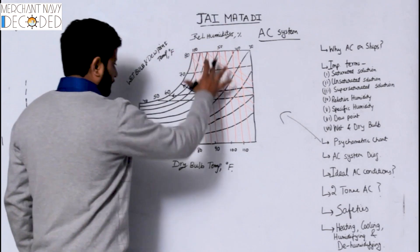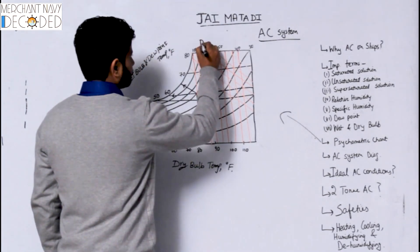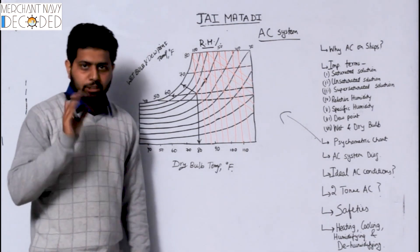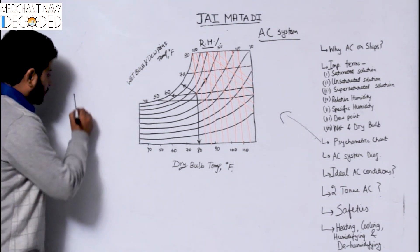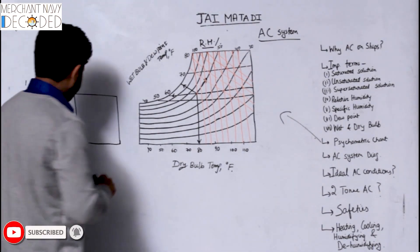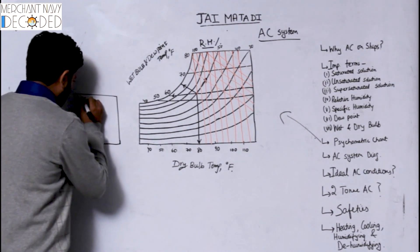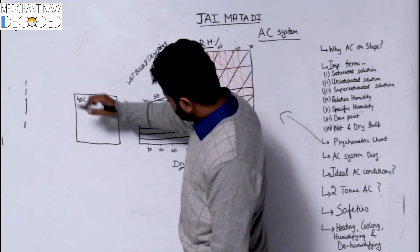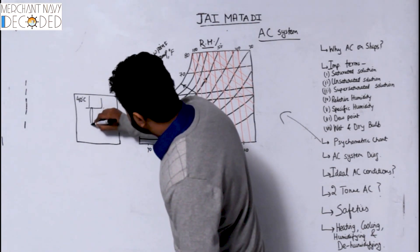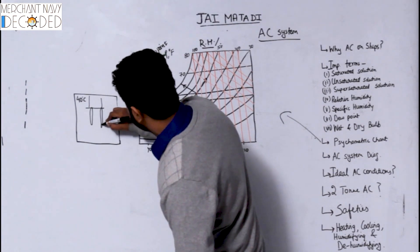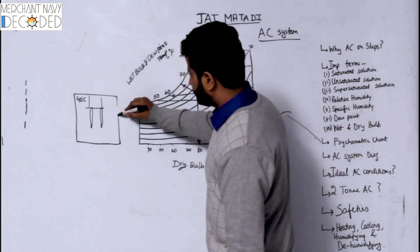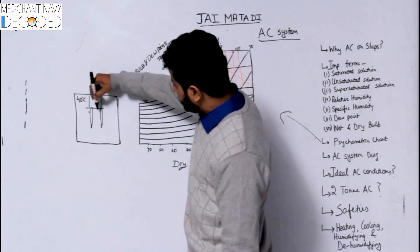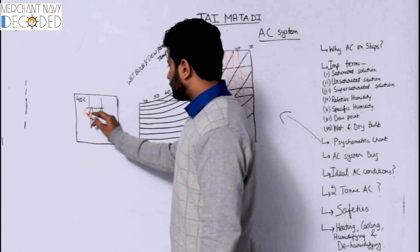This is a psychrometric chart, but before that I will talk about wet bulb and dry bulb temperature. So I take a room and make the temperature 40 degrees centigrade, and I have two thermometers in this room. Now if the temperature is 40 degrees centigrade, both thermometers are going to read 40 degrees each.